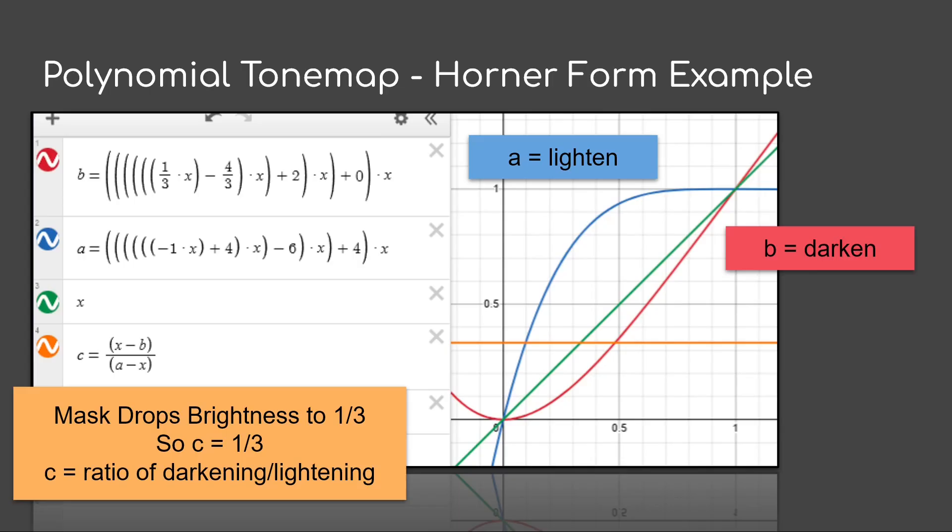I'm starting here by showing a solution to the Tone Mappers. In this case, we have our transfer function. X is going to be like the color going from 0 to 1. A, the blue one, is the Lightning Tone Mapper. B, the red one, is the Darkening Tone Mapper. The mask in this case is set to one-third, so it's a pretty aggressive mask.